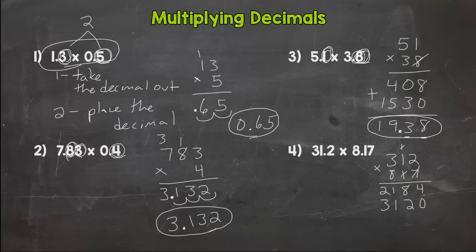And then for this 8, we need two placeholder zeros. 8 times 2 is 16. 8 times 1 is 8, plus 1 is 9. And 8 times 3 is 24.